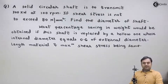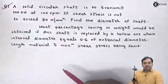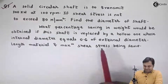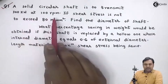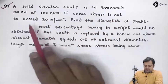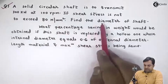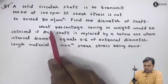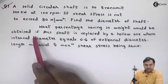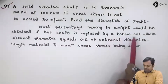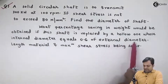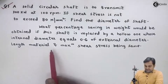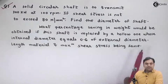Hello students, let us take a new question in the topic of torsion. A solid circular shaft is to transmit 300 kilowatts at 100 rpm. If shear stress is not to exceed 80 Newton per mm square, find the diameter of the shaft. What percentage saving in weight would be obtained if this shaft is replaced by a hollow one whose internal diameter equals 0.6 of the external diameter?